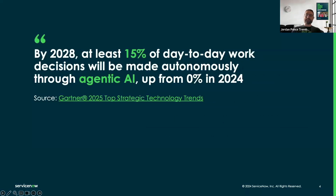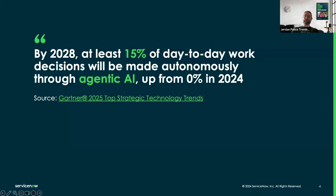So you might ask, why is everyone talking about AI agents right now? According to Gartner, by 2028, at least 15% of day-to-day work decisions will be made autonomously through agentic AI. This is huge.